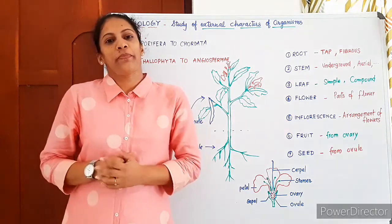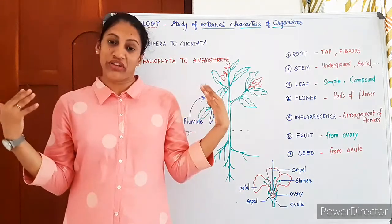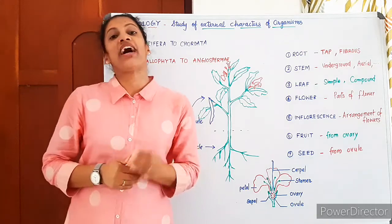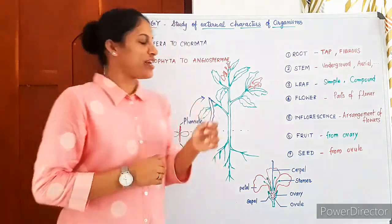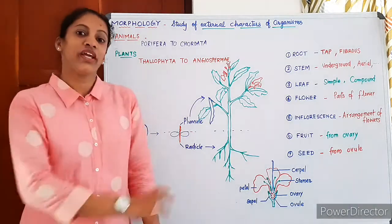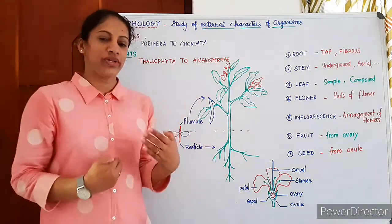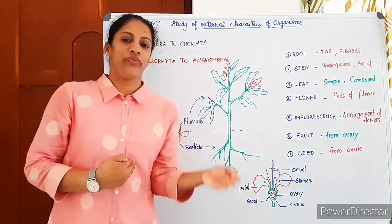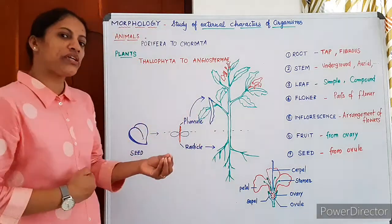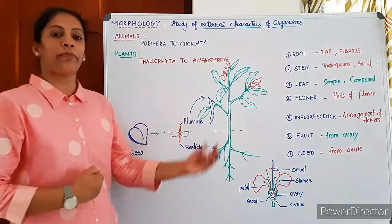In higher plants, there are very well-developed different types of stems, roots, leaves, etc. If it is a seed, a seed on germination — the seed is usually germinating in soil with the help of oxygen and water. After a period of dormancy, every viable seed germinates to produce a plant.